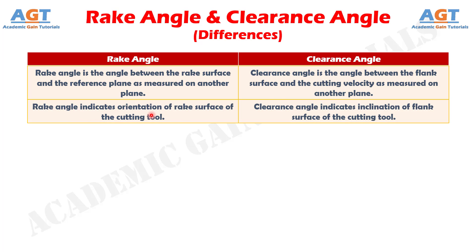Difference number 2: rake angle indicates orientation of the rake surface of the cutting tool, whereas clearance angle indicates inclination of the flank surface of the cutting tool.